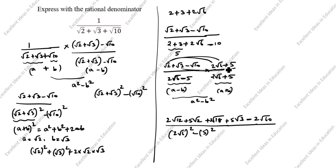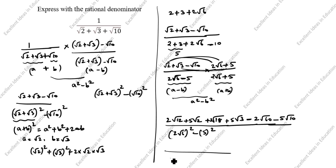Continuing: minus root 10 into 5 gives minus 5 root 10. For the denominator: (2 root 6) squared minus 5 squared equals 2 times 2 times root 6 times root 6 minus 25, which is 4 times 6 minus 25, giving 24 minus 25.